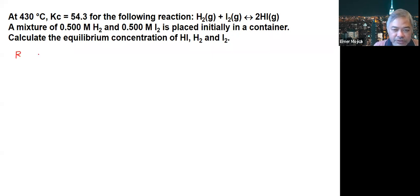So you write the reaction: H2 gas plus I2 gas producing 2HI gas. Initially you have 0.5, 0.5, and 0.